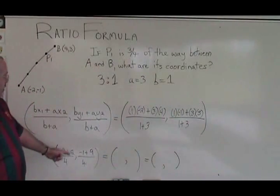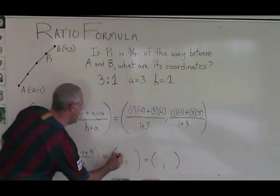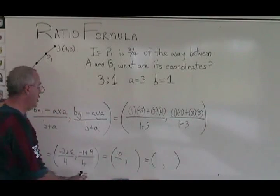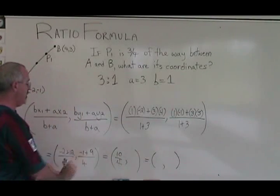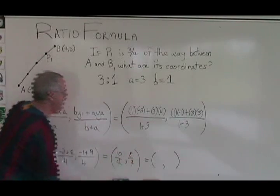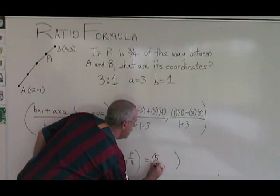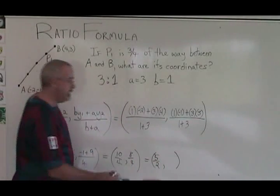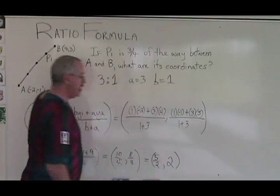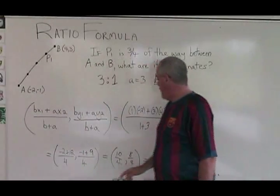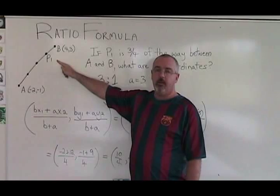Simplifying further, negative two plus twelve is equal to ten over four. And negative one plus nine is equal to eight over four. Ten over four reduces to five over two. And eight over four reduces to two. The coordinates of P1 are five halves comma two, right there.